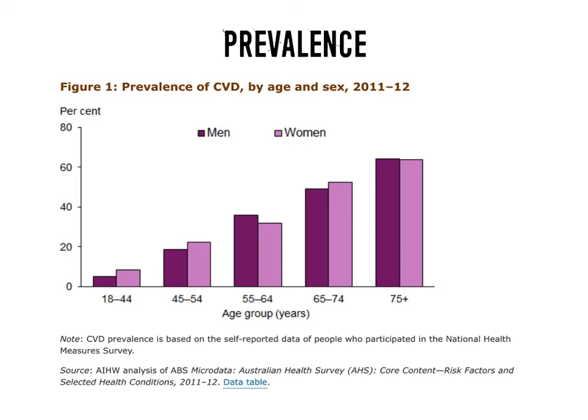Looking at this graph, we can see the prevalence of cardiovascular disease by age and sex. The dark purple colour represents men and the lighter colour represents women. You can see that in the 55 to 64 age group, more males are likely to have cardiovascular disease. As the population ages, females take over in the 65 to 74 age group, levelling out at 75 plus. Overall, as people age, the prevalence of CVD increases.